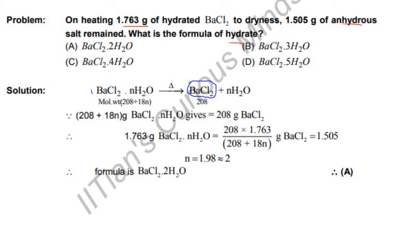The molecular weight of barium chloride, this salt, is 208 plus 18 times n. 18 is the weight of H2O and since there are n molecules of water, it is 18n. And this gives 208 and this also gives 18n.